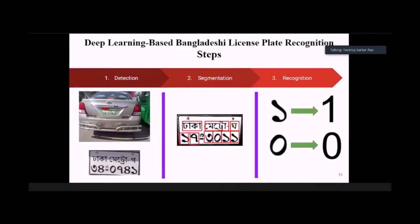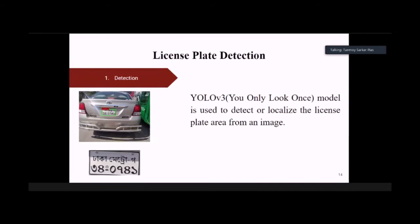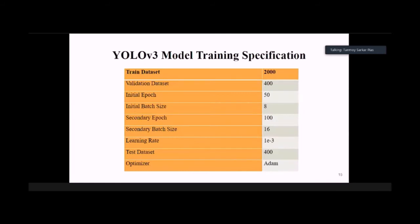We can divide our process into three steps: detection, segmentation, and recognition. In detection, we used YOLO version 3. When we were working on this research, YOLO version 3 was state of the art. That's why we used YOLO version 3 and it is real-time. We can implement this total system in real-time with YOLO version 3. This is the training specification of YOLO version 3. The important thing is we used 2000 images to train this model.